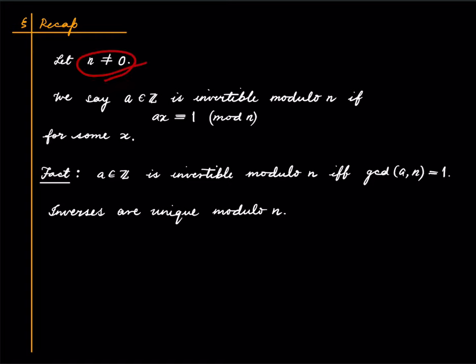So fix a non-zero integer n. We say that an integer a is invertible modulo n if there is an x such that ax ≡ 1 (mod n). It's a very useful criterion to check invertibility that if I'm given an integer a and some positive integer n, then a is invertible modulo n if and only if n and a are relatively prime, meaning gcd(a,n) = 1.